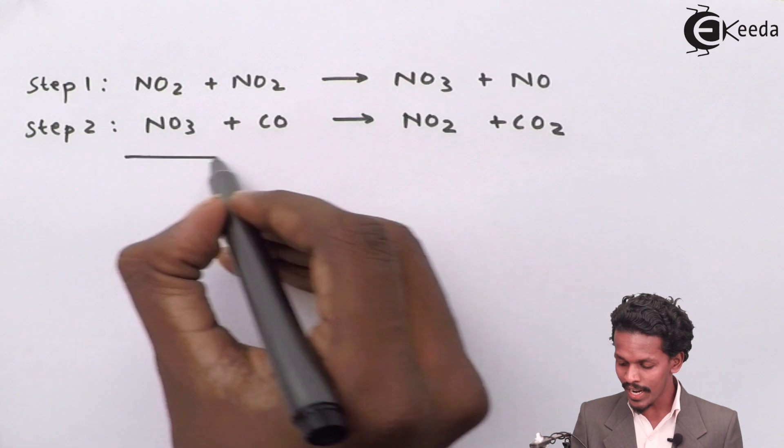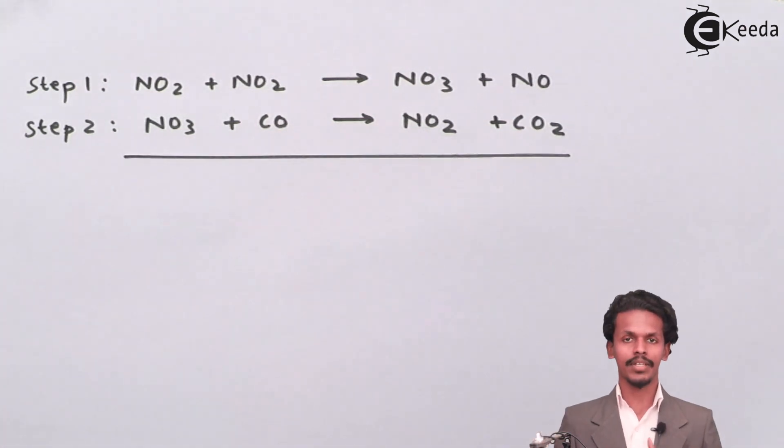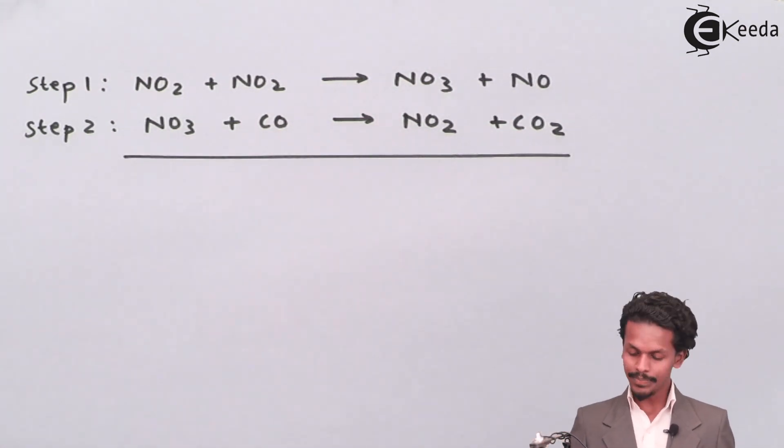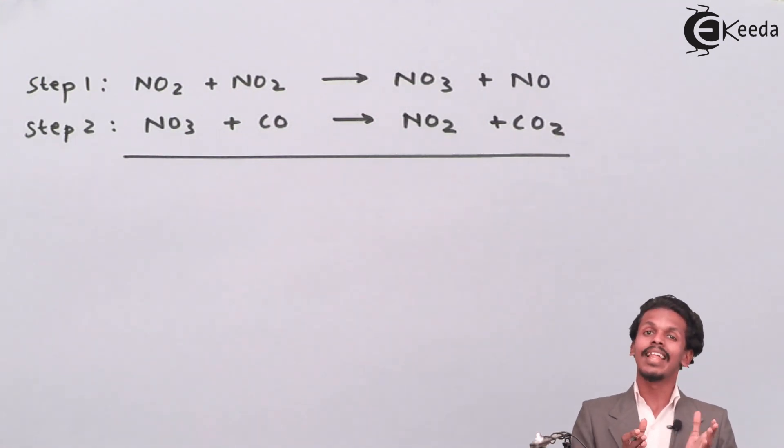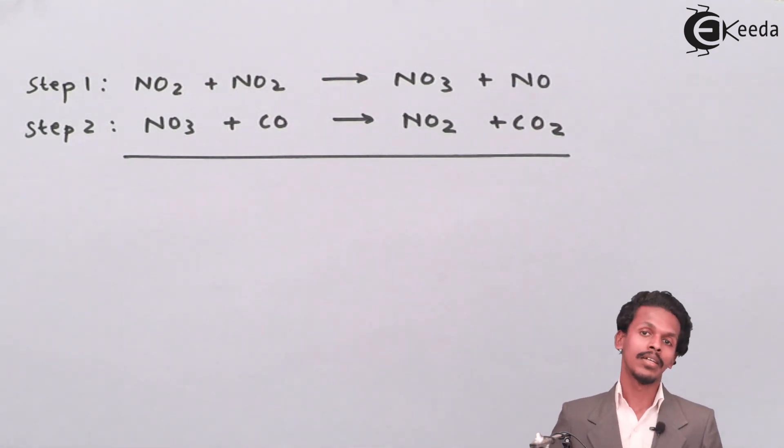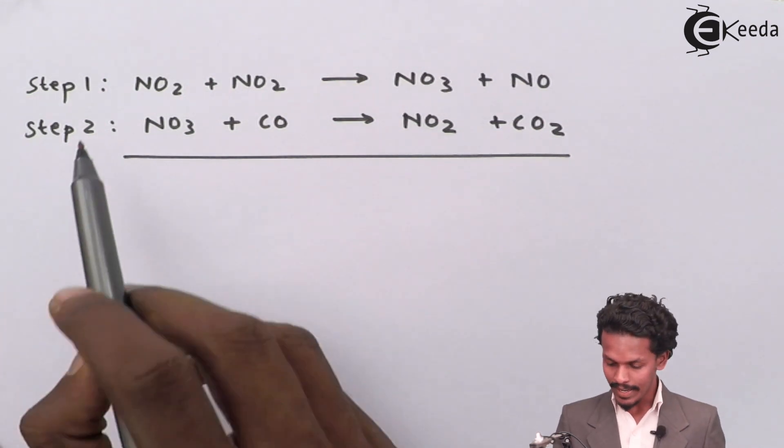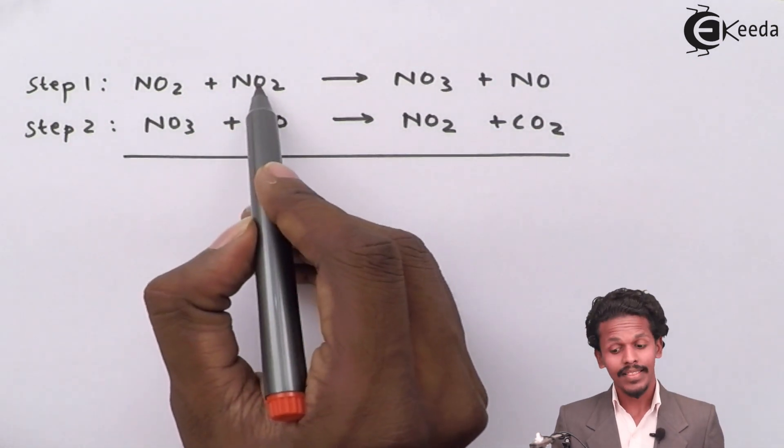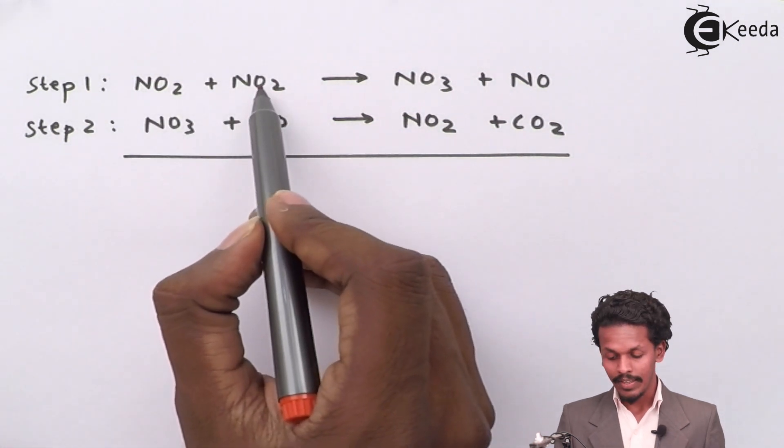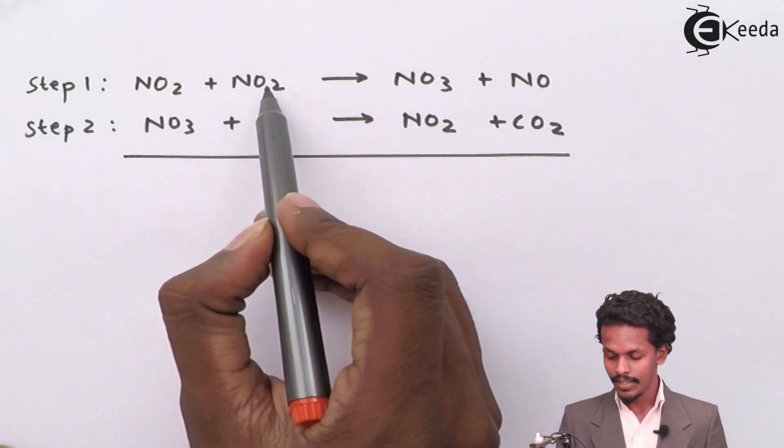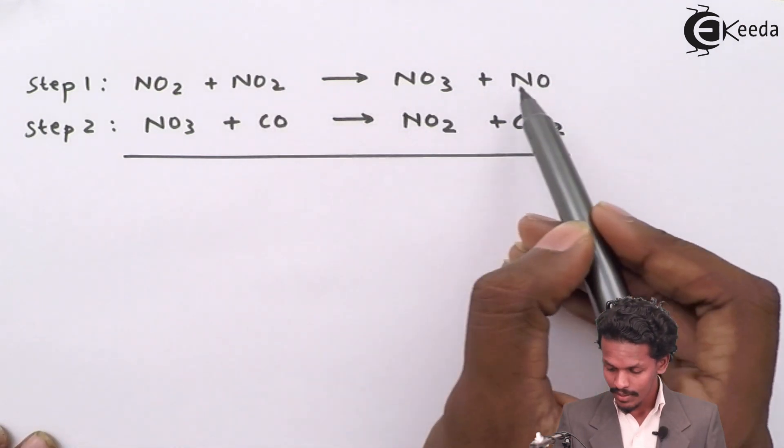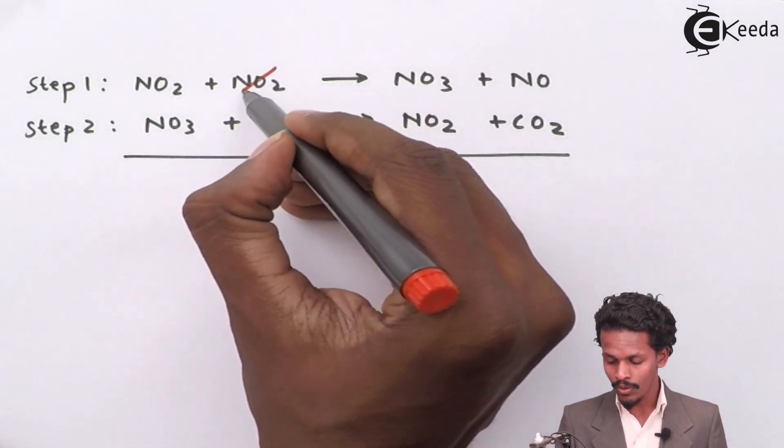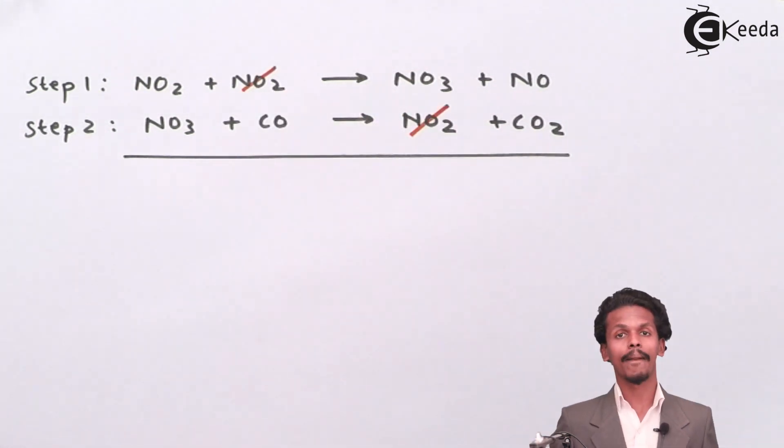Now the overall reaction would be if we take the simultaneous reaction. I can eliminate such molecules or reactants which are present on the left-hand side and right-hand side - the common molecules or atoms. I can see that this NO2 is present on the left-hand side, and there is NO2 present on the right-hand side. So basically, this NO2 will eliminate this NO2. Simple.